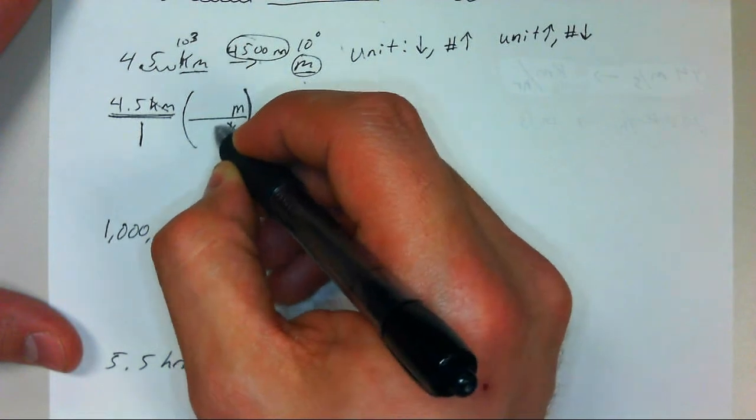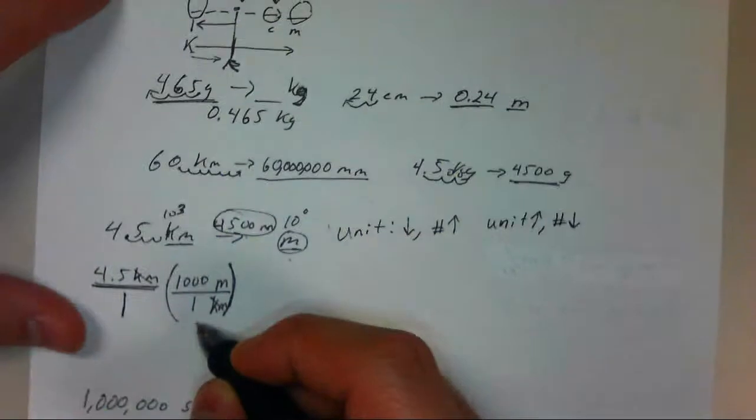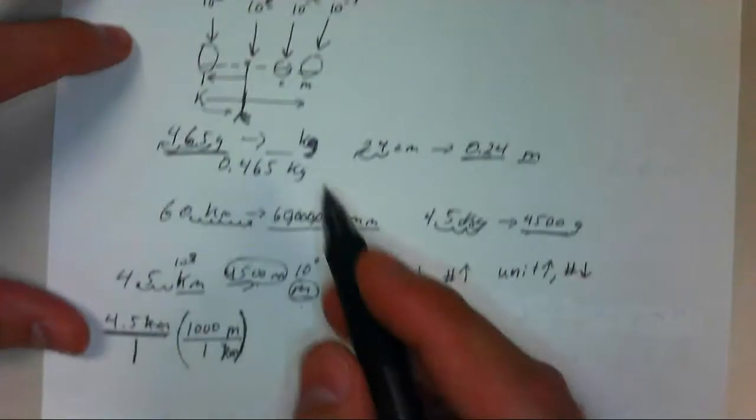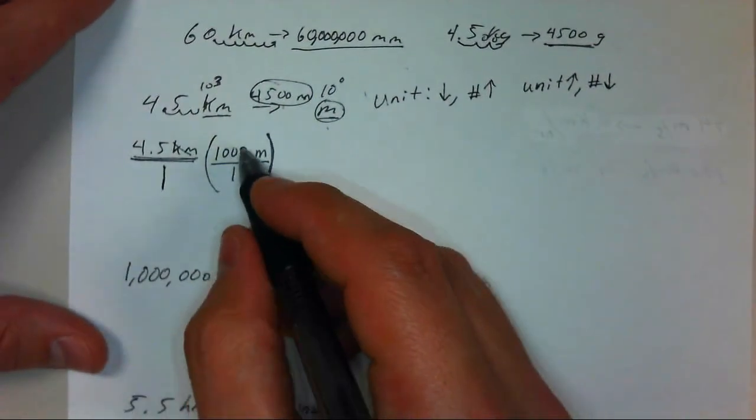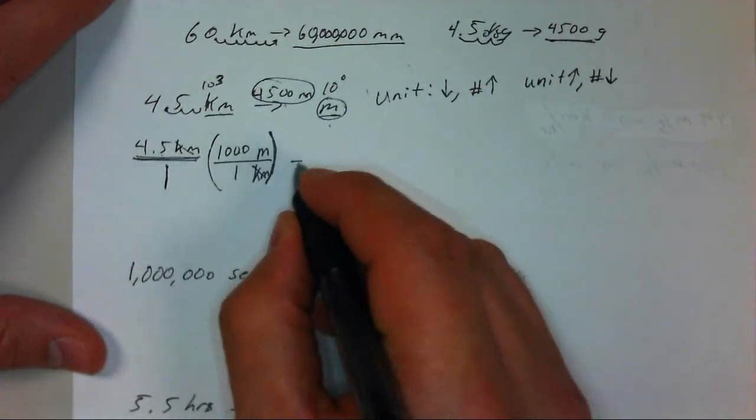And our conversion factor is that there are 1,000 meters in 1 kilometer. And we get that from our number line that we've been discussing. Kilo is 10 to the third, which is 1,000. So there are 1,000 meters in 1 kilometer. So we simply multiply 4.5 times 1,000 here.